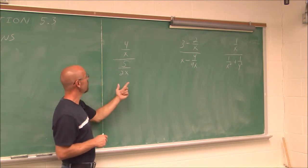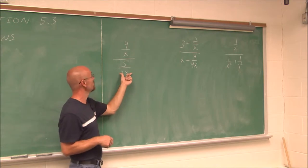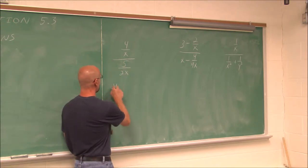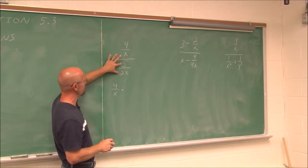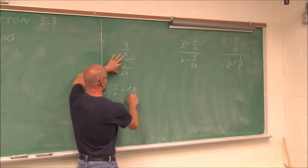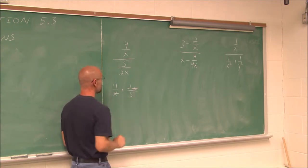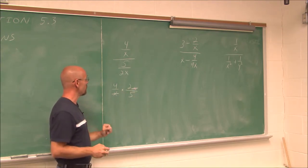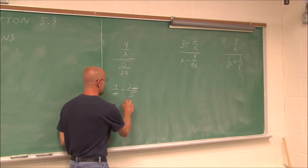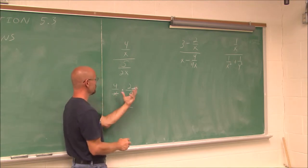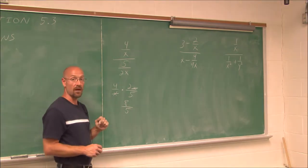Now we just multiply by the reciprocal of the denominator, just like we did in the previous example. I'm going to take 4 over x times the reciprocal of the bottom. The reciprocal of 5 over 2x would be 2x over 5. Now we're ready to simplify: the x's reduce. These numbers have no common factors, so we multiply the numerators — 4 times 2 is 8 — and the x reduced to 1, times 5 is 5. So we get 8/5.